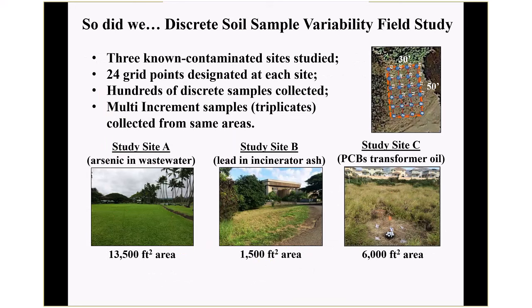A few years ago, we used grant money from U.S. EPA to carry out a field study of discrete sample variability. We went to three known contaminated sites and set 24 grid points at each. At each grid point across the site, we collected hundreds of side-by-side discrete samples. Study site A was contaminated with arsenic from wastewater discharge onto fine-grained soils — we expected lower variability. Study site B was contaminated with lead from incinerator ash mixed with fill material. Study site C was contaminated with PCBs from dumping of transformer oil — we saw huge variability in discrete samples from this site.